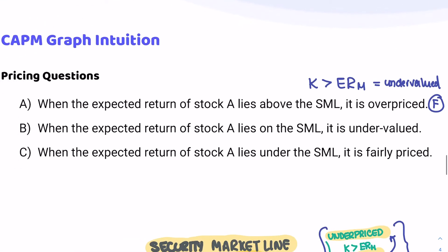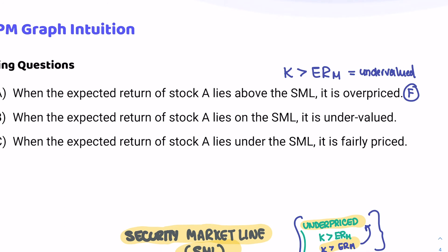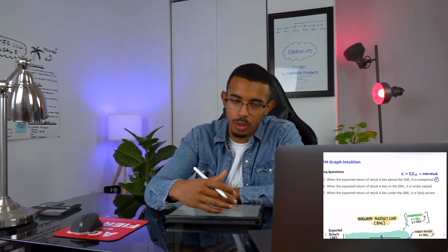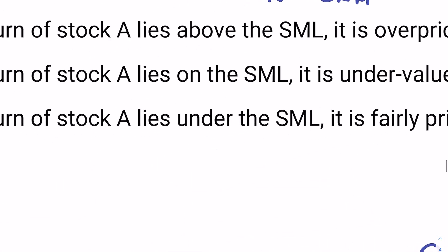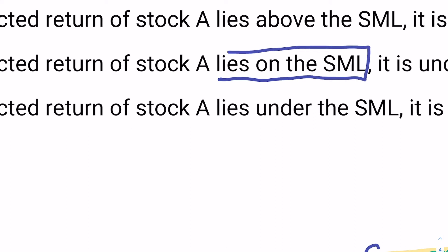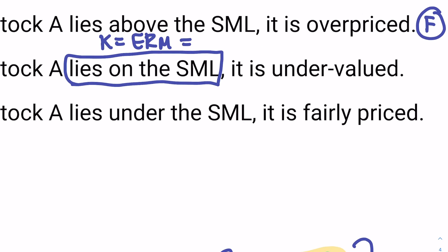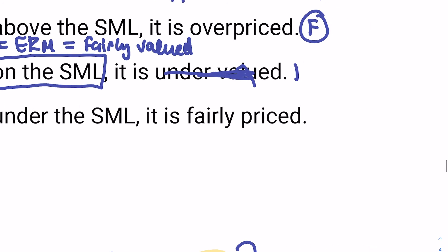Conversely, if we look at B, they're telling you that when the expected return of stock A lies on the SML, it is undervalued. That's not true because we said that for something to be fairly valued, the expected return of the market has to be equal to K. That's the scenario in which something would be fairly valued. This is exactly the case here because we're telling you that K lies on the SML, so K equals the return of the market. Therefore, this has to be fairly valued, and saying it's undervalued is false. B is false.